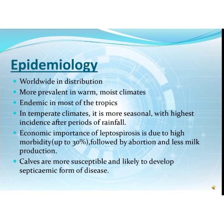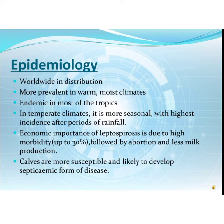Now coming to the epidemiology. Leptospirosis is found throughout the world. The infection is more prevalent in warm, moist climates and is endemic in most of the tropics. In temperate climates, the disease is more seasonal with the highest incidence after periods of rainfall. Economic importance of Leptospirosis is due to high morbidity, up to 30%, followed by abortion and loss of milk production. Calves are more susceptible and likely to develop the septicemic form of the disease.